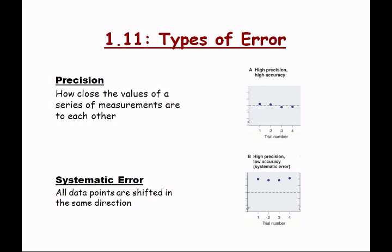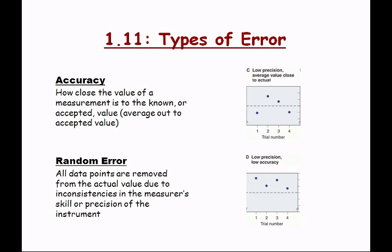All the points here systematically will be above the correct value because your balance is inherently incorrect — your measuring device is consistently giving an answer above the correct answer. Precision tells you how close your values are to each other. Here we see high precision — all the values are essentially the same — and even if you have a systematic error, you can still be very precise. This is like a dart thrower who consistently hits the number 11 on the outside of the board — very precise, but not accurate.